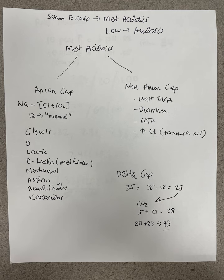pH will help qualify the acidosis — is it pure metabolic acidosis? Is there a mixed picture? That's where pH comes in. But simply, anyone with a low bicarbonate has metabolic acidosis, whether compensated or not. Metabolic acidosis is low serum bicarbonate.